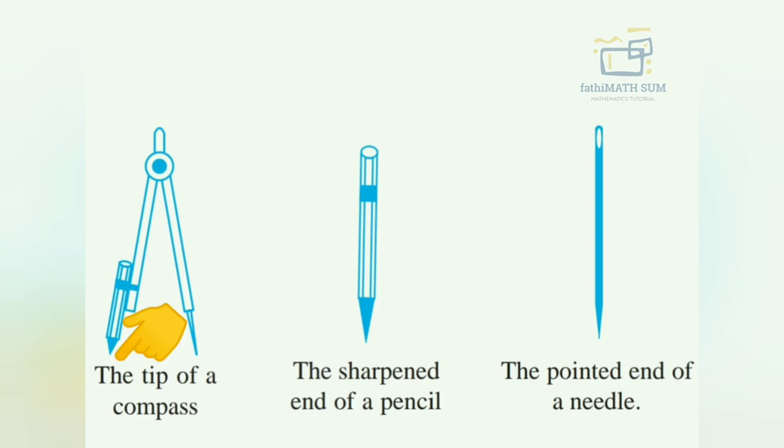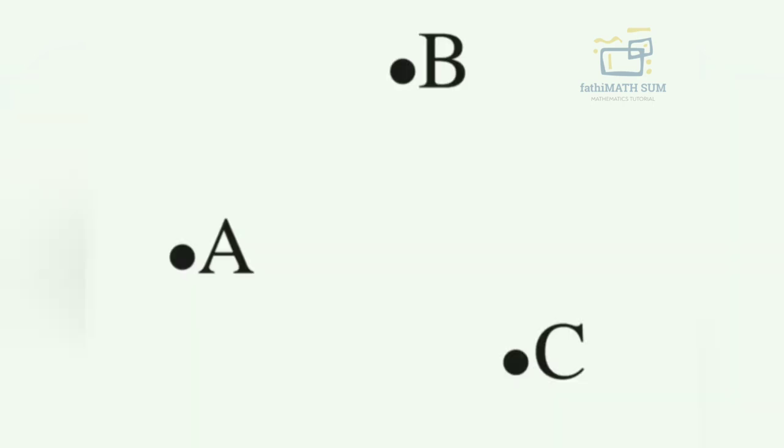You can see on the screen when you draw a point by using a compass, the tip of a compass gives a point. When you draw a point by using a sharpened end of a pencil, it will give a point. The pointer end of a needle also gives you a point. If you mark all these three points on a paper, you will be required to distinguish them. For this, they are denoted by a single capital letter like A, B, C, D.